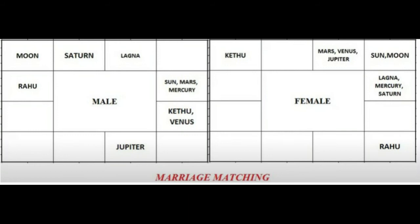Now the tenth rule: similarly, compare the seventh lord with the fifth and ninth lords in both the boy's and girl's charts. This shows the punyapunya, bhagya (fortune), and also childbirth potential. In the boy's chart, the seventh lord is Mars, the fifth lord is Mercury, and the ninth lord is Saturn. Mars and Mercury are in kendra, Mars and Saturn are in kendra, and Saturn and Mercury are in kendra — everything is fine. In the girl's chart, the seventh lord is Saturn, the fifth lord is Mars, and the ninth lord is Jupiter. Saturn and Mars are in 3-11, Saturn and Jupiter are in 3-11, and Mars and Jupiter are in kendra — everything is fine here as well.